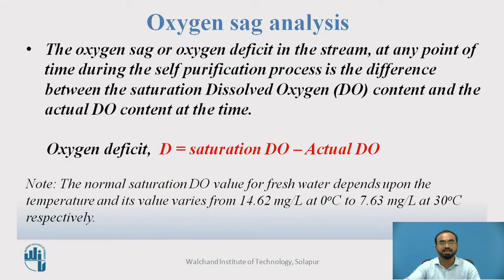What is oxygen sag analysis? To go into the details, first we have to analyze what parameters are included in it. Oxygen sag, or oxygen deficit in the stream at any point of time during the self-purification process, is basically the difference between the saturation dissolved oxygen (DO) content and the actual DO content at that time. So in simple words, oxygen deficit D equals saturation DO minus actual DO. The normal saturation DO value for fresh water depends upon temperature, varying from 14.62 mg per litre at 0°C to 7.63 mg per litre at 30°C. So as temperature increases, saturation DO decreases.